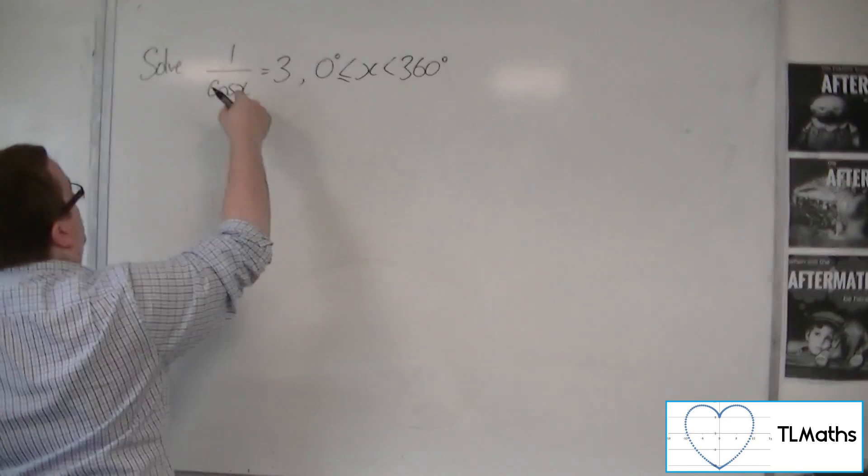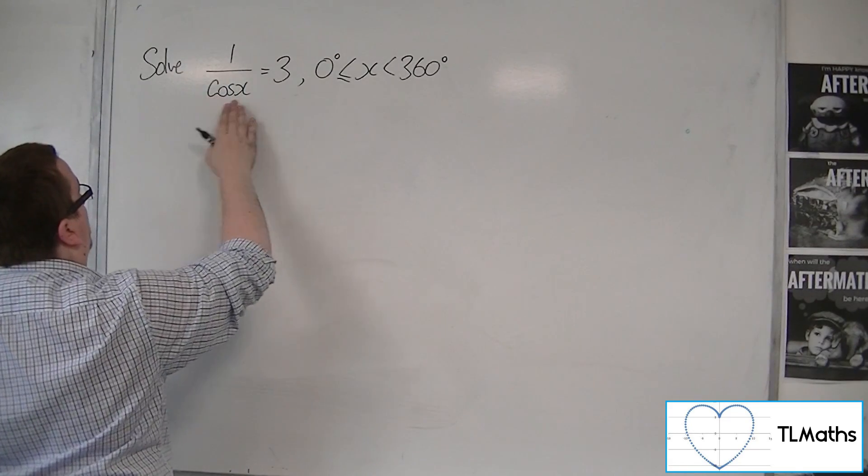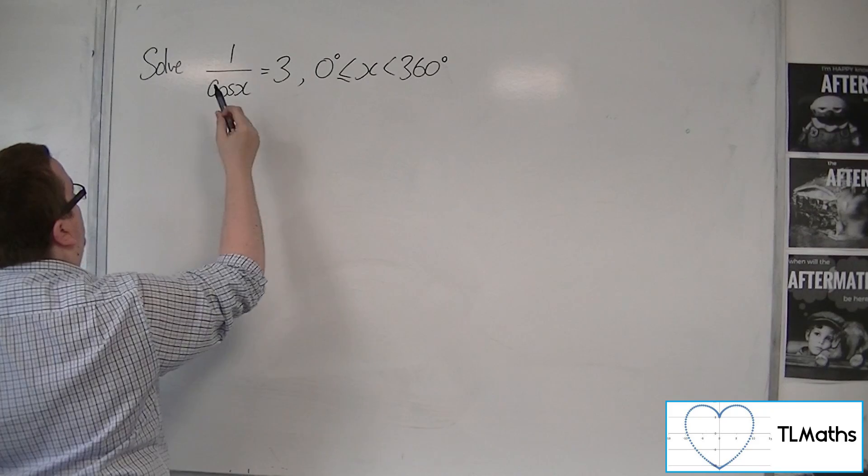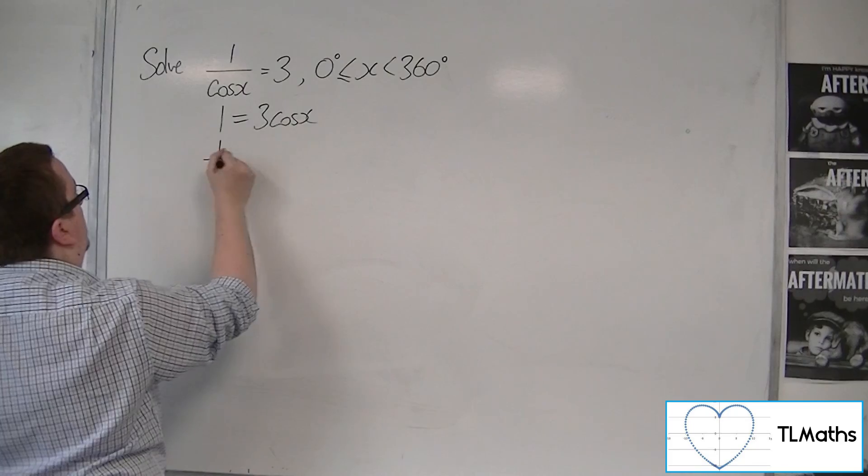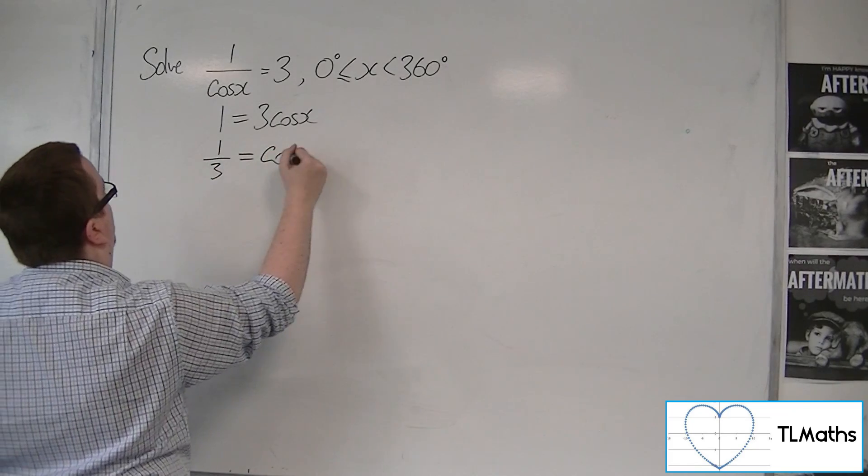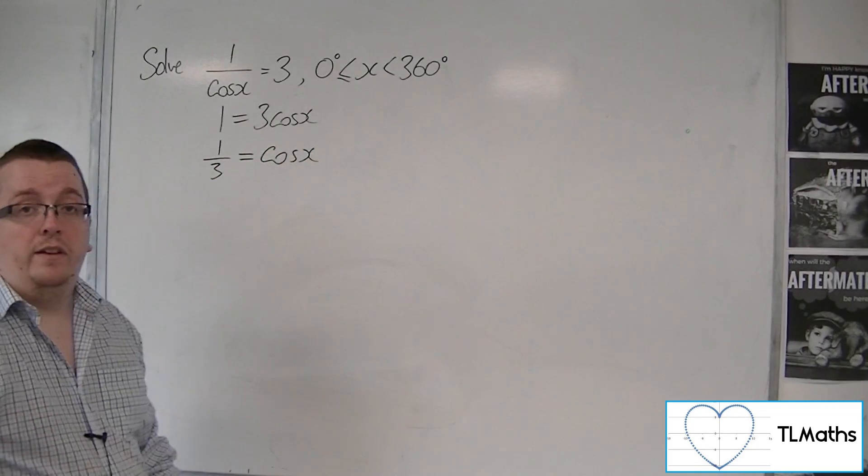So what you can think about is you could multiply both sides by cos x and then divide both sides by 3. And so you'd be solving cos x equals 1 third.